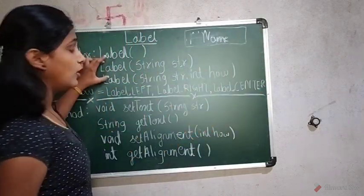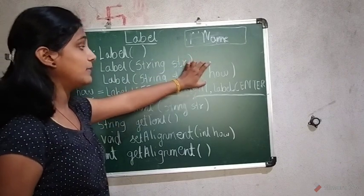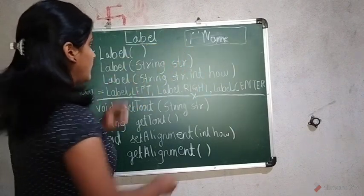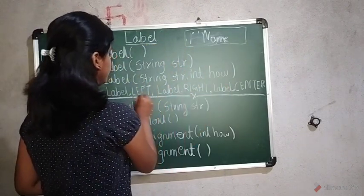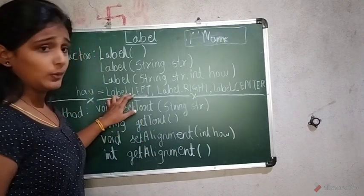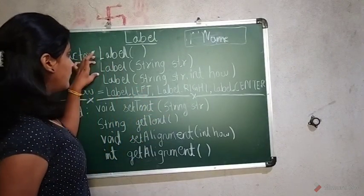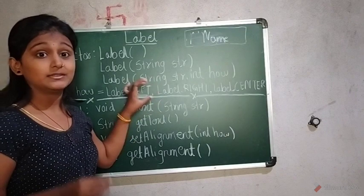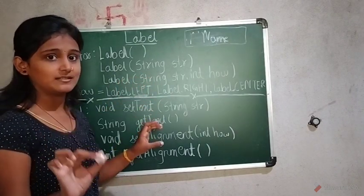But here if you have not passed integer hub, if this parameter is not there, then by default here is left hub. So by default it will be left justified, label.left justify.